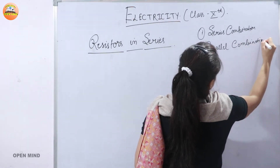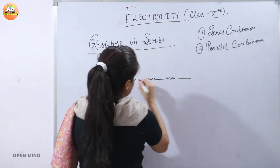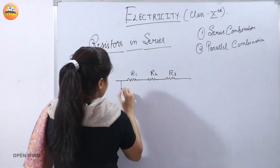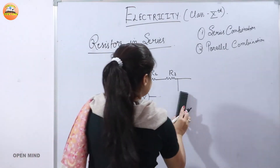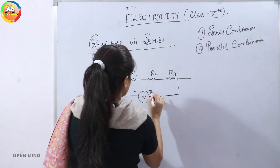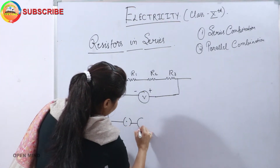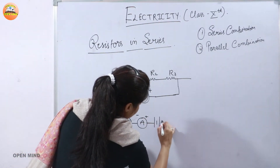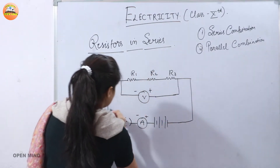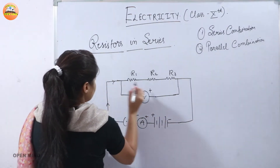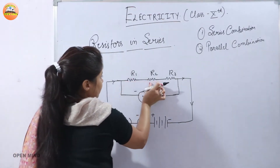We will first see the series combination — that is, resistors in series. For that, we take three resistors R1, R2, and R3 connected in a single line. We connect a voltmeter in parallel across them, and complete the circuit by connecting it to a cell or battery, a key, and an ammeter.